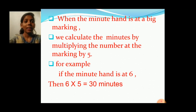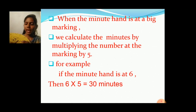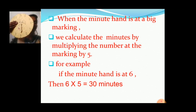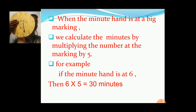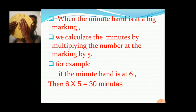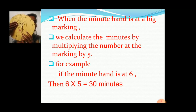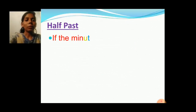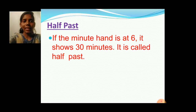And today we will learn half past. Half past means — when the minute hand is at number 6, it shows 30 minutes, because 6 fives are 30. And this 30 minutes means that time is called half past. When the minute hand is at number 6, it shows 30 minutes, and it is called half past.